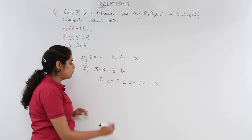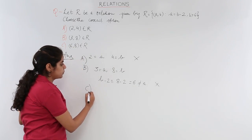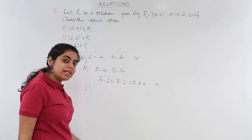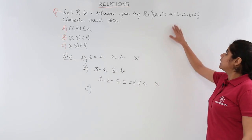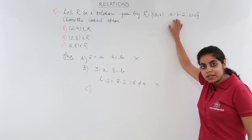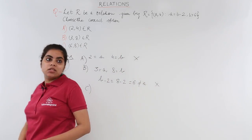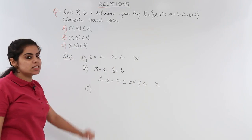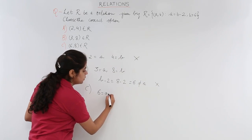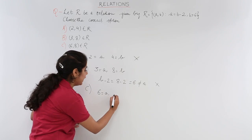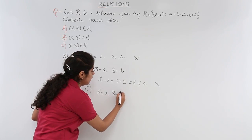Let's now move on to the third and final option, option C, and check the validity of option C as per the given relation a equals b minus 2. Option C is (6, 8) belongs to R. So 6 is equal to a and 8 is equal to b.